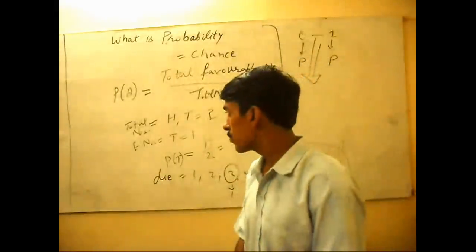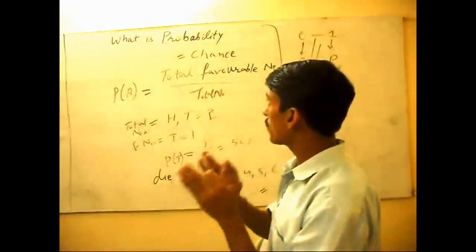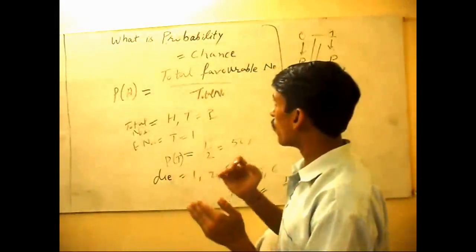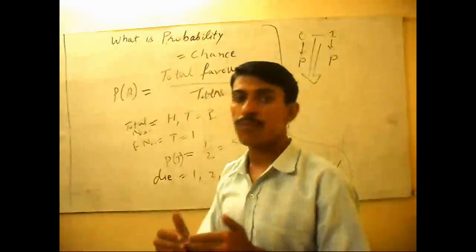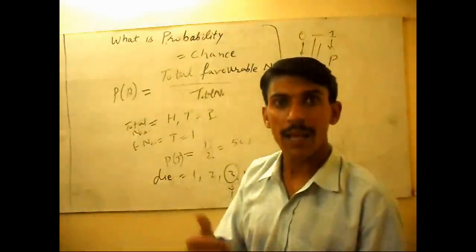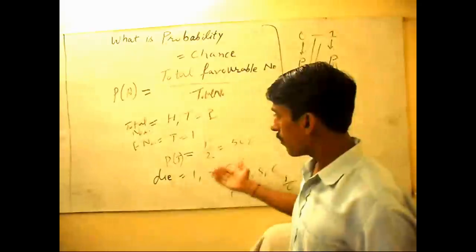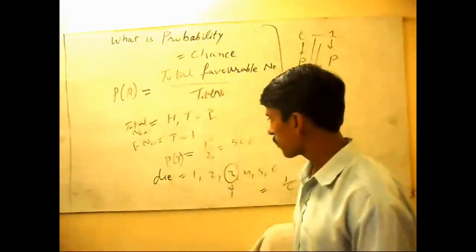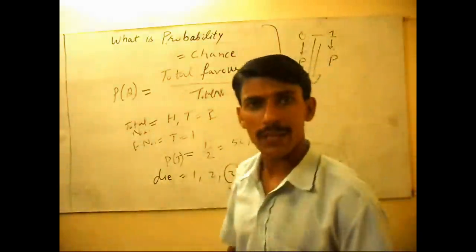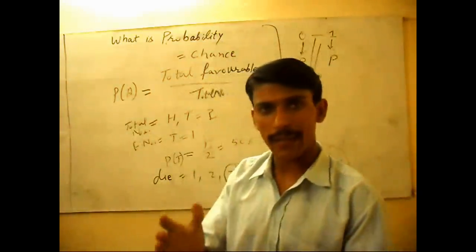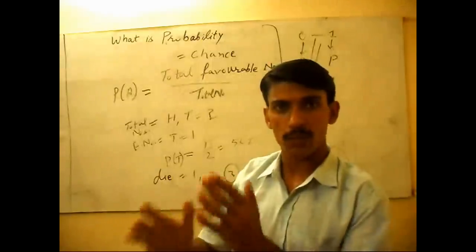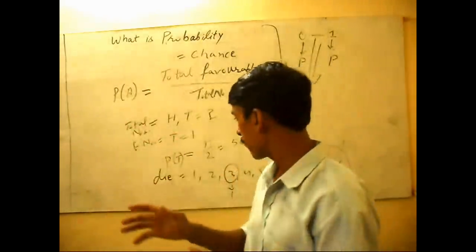So this is a scientific rule and regulation of any possibility, any likelihood. I will take another example. Suppose you have a die and it has six parts: one, two, three, four, five, six.